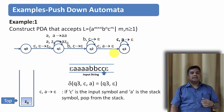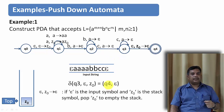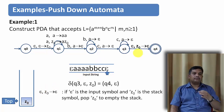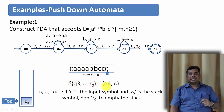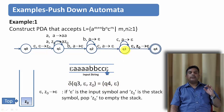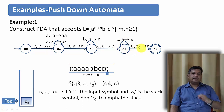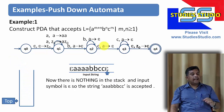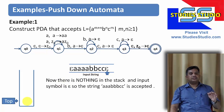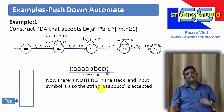The next input symbol is epsilon, and z0 is at the top of the stack. We pop z0 and declare the string accepted. The transition is delta(q3, epsilon, z0) = (q4, epsilon) — we were in state q3, got epsilon as input, z0 was on top, so we pop it and go to the final state q4. Nothing remains on the stack and the input is fully consumed, so the string a a a a b b c c is accepted.